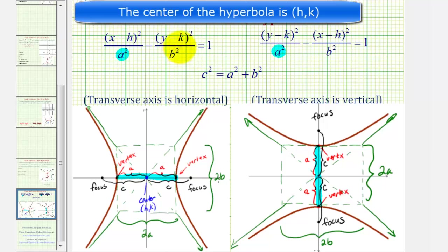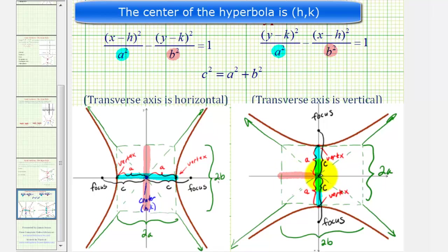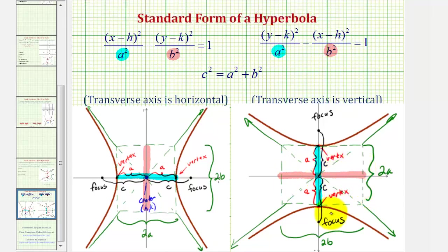The denominator of the fraction that we're subtracting is always equal to b squared, where b gives us the distance from the center to the two endpoints of the conjugate or minor axis. The length of the major axis in both cases is equal to 2a, and the length of the minor axis or conjugate axis is equal to 2b in both cases.